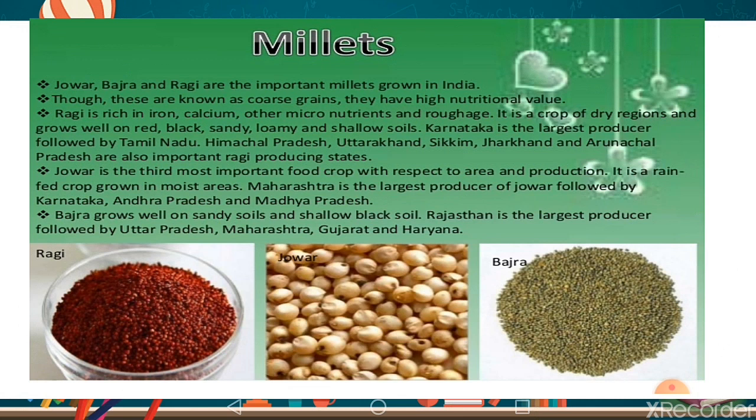Millets are crops of dry regions. They grow well on red, black, sandy, loamy, and shallow soils. To grow millets you do not need a high moisture or humid atmosphere — they can be produced in dry regions on various soil types.